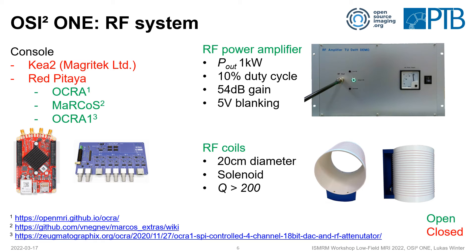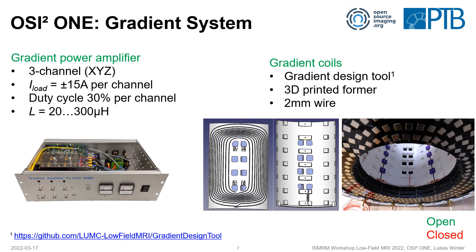There are several RF coils available — basically solenoid coils. You have 3D printed formers that you can use to wind your RF coils. For the gradient system, we have a three-channel gradient power amplifier, also an open source hardware design, with plus/minus 15 amps per channel and 30% duty cycle, which can be used with different gradient coils. The gradient coils are based on an open source software gradient design tool, which is transformed into a CAD model — you can 3D print it, insert wire and glue it, and then insert the X, Y, and Z gradient coils nicely into the magnet.